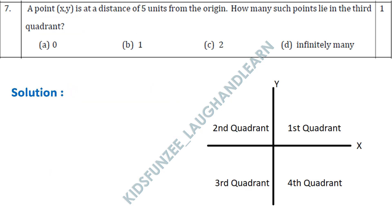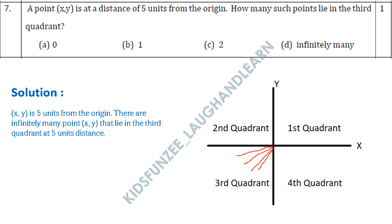Question 7: A point (x, y) is at a distance of 5 units from the origin. How many such points lie in the third quadrant? Since many points on the circle of radius 5 centered at the origin fall in the third quadrant, there are infinitely many such points. The answer is option D: infinitely many.